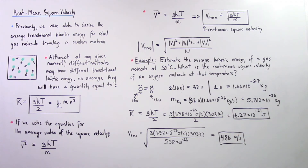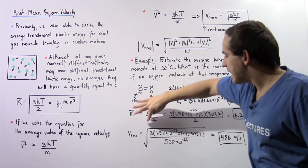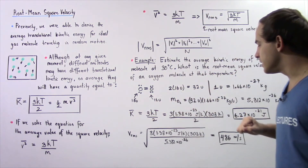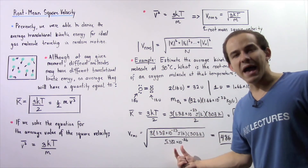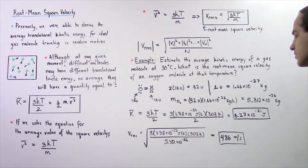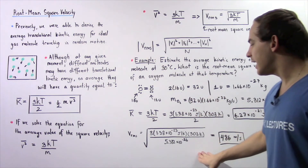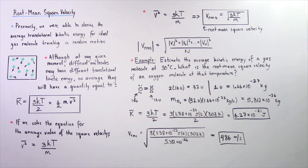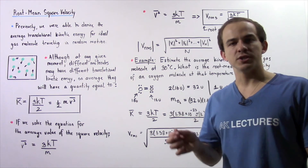To calculate the root mean square velocity, we use the equation v_rms equals the square root of 3kT divided by m. Substituting 3 times the Boltzmann constant times 303 Kelvin, divided by the mass of the diatomic oxygen molecule we calculated, we take the product, divide, and take the square root. The result is that the root mean square velocity of the oxygen molecule is approximately 486 meters per second, which is above the speed of sound in air.